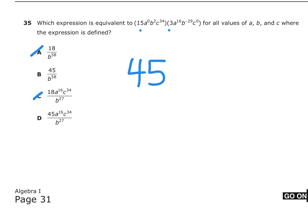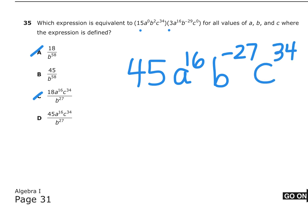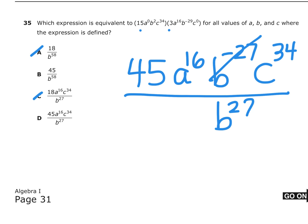Now I need to figure out a to the 0 times a to the 16th. When we're multiplying, we add the exponents: 0 plus 16 is a to the 16th. Then b squared times b to the negative 29 — we add 2 plus negative 29 — that gives b to the negative 27th power. And c to the 34th times c to the 0 is 34 plus 0. For the negative exponent, the rule is take the reciprocal and bring it to the denominator, making it positive. So we're looking for 45 times a to the 16th times c to the 34th over b to the 27th, which is answer D.